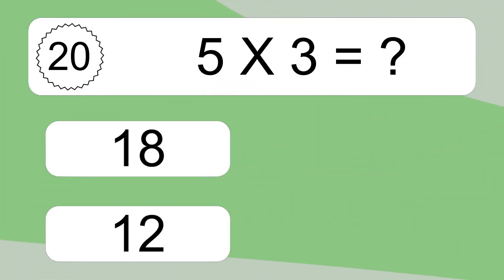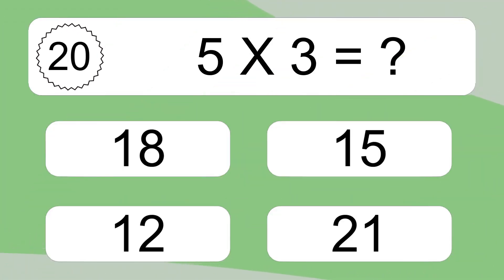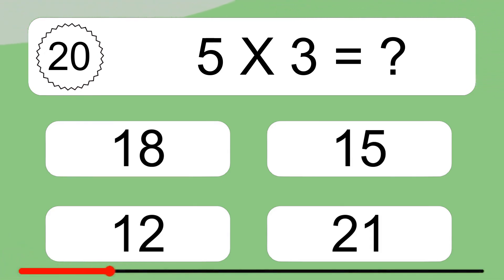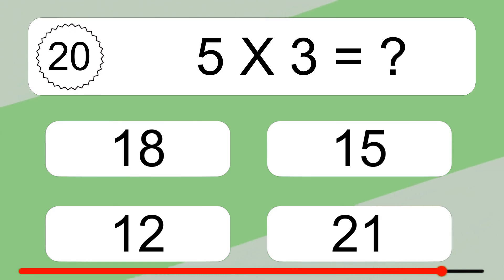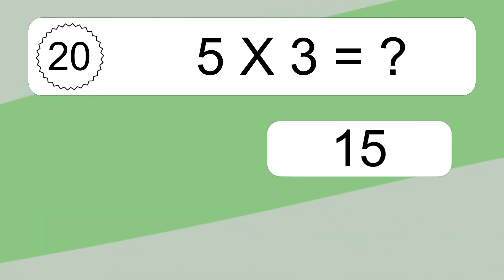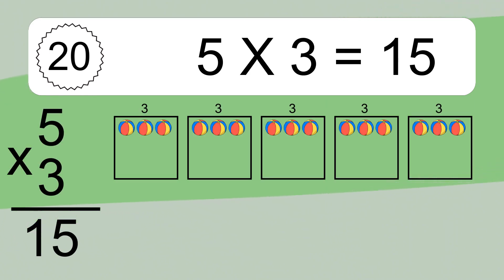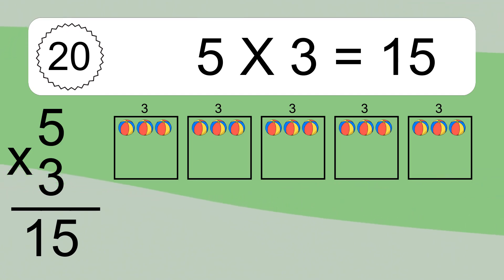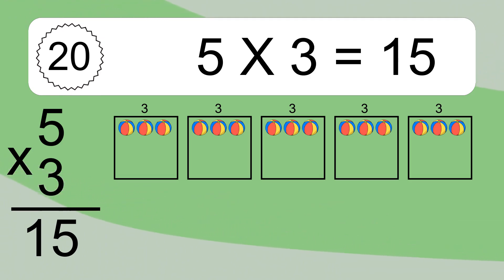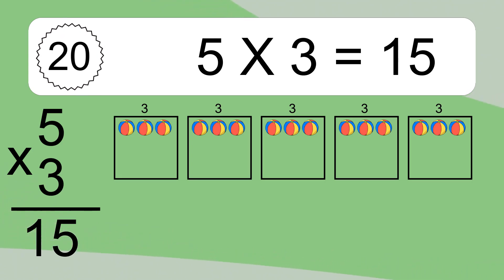5 times 3 equals what? 5 times 3 equals 15. We have 5 boxes, and each box has 3 colorful balls inside. If you count all the balls in all the boxes together, you will have 5 times 3 balls. This equals 15 balls. See you next time.